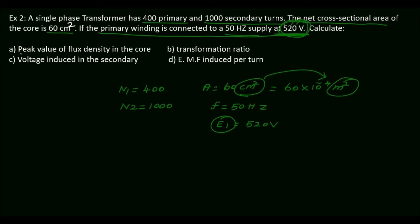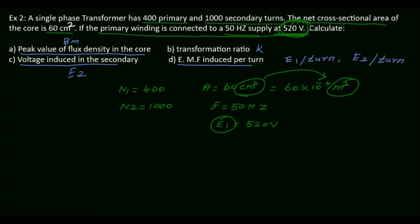We need to calculate: (1) the peak value of flux density in the core, BM; (2) the transformation ratio K; (3) the voltage induced in the secondary E2; and (4) the EMF induced per turn on both primary and secondary sides. First we will find BM, the peak value of flux density in the core.